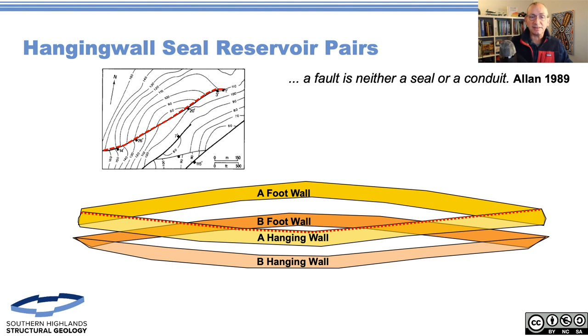From that we can similarly paste in our stratigraphy and overlay it. I tend only to put the aquifers or reservoirs in place, because if I'm happy that's a seal I don't need to color it in. What I'm looking for is aquifer against aquifer, reservoir against reservoir. We can see we've got A in the footwall, A in the hangwall, B on the hangwall, B in the footwall.